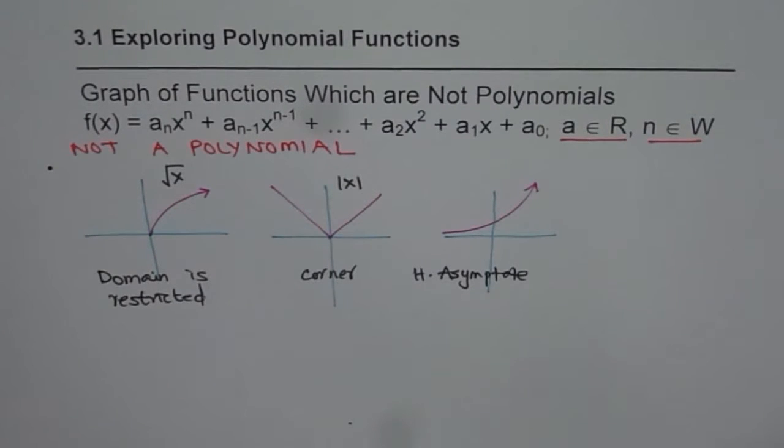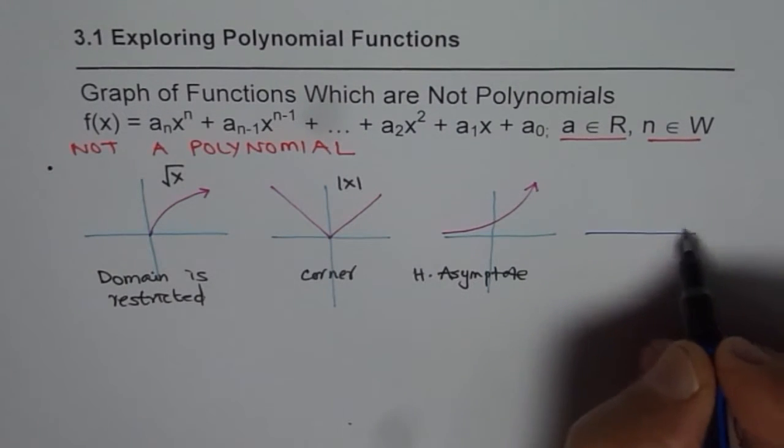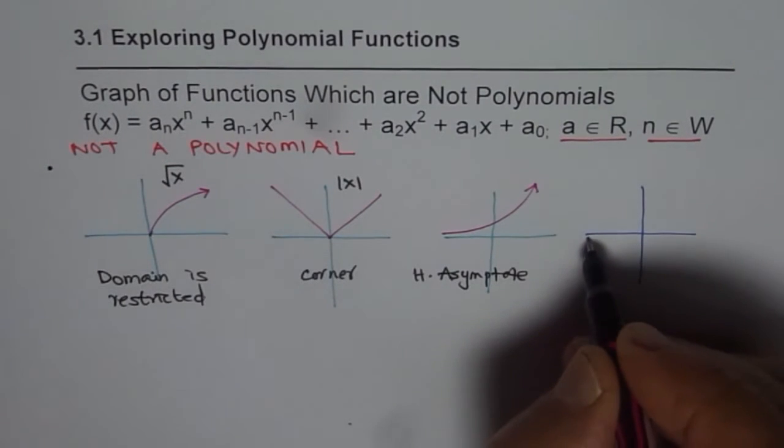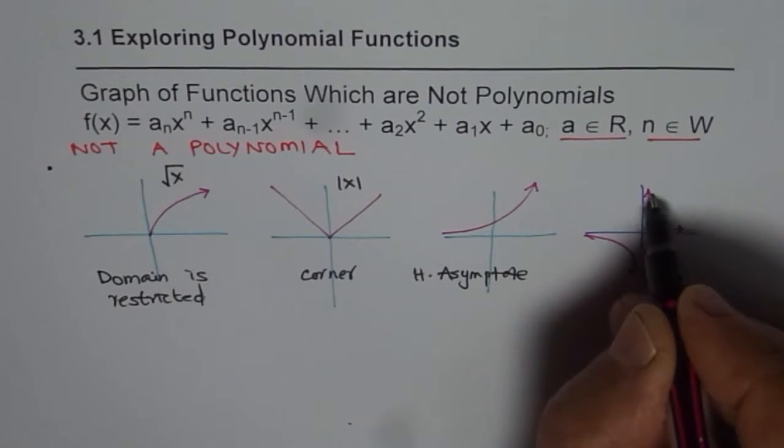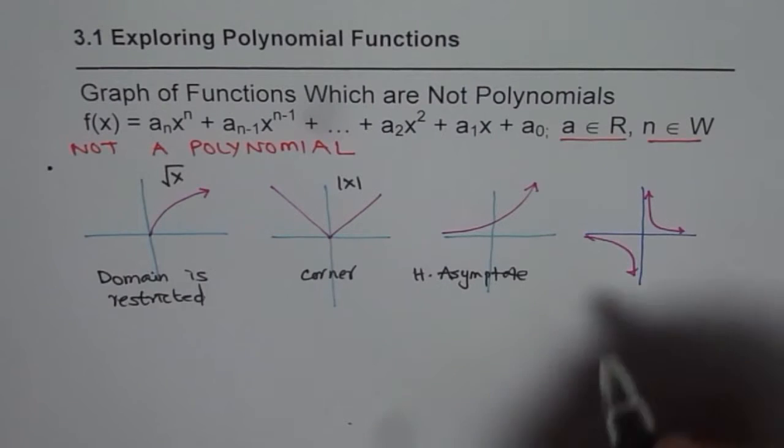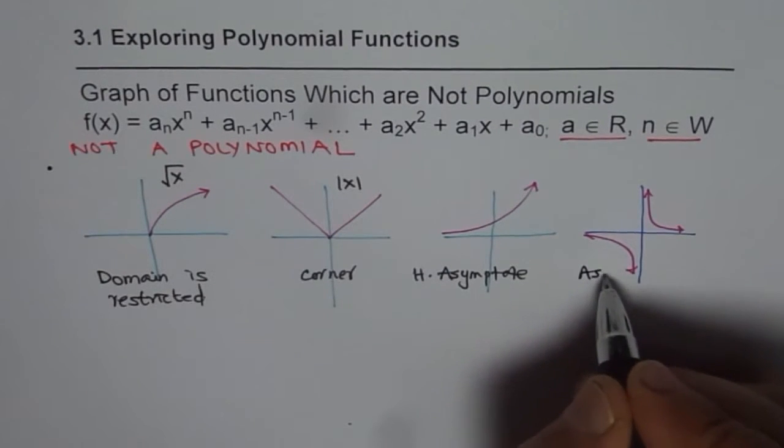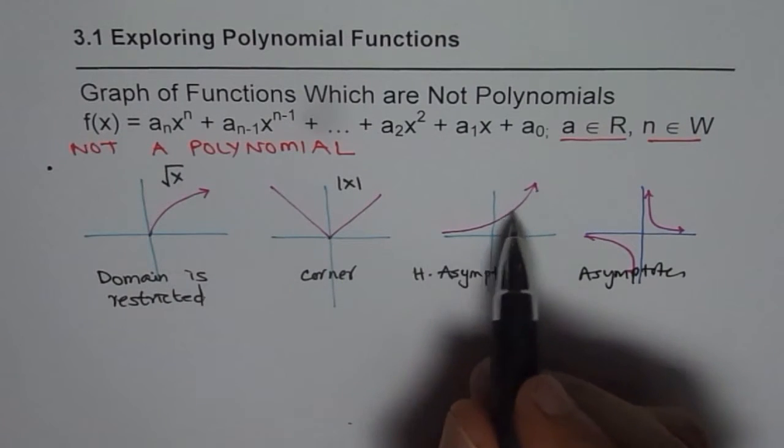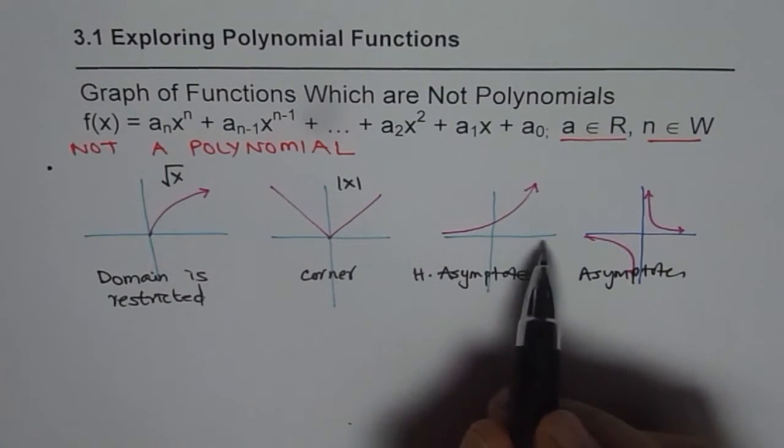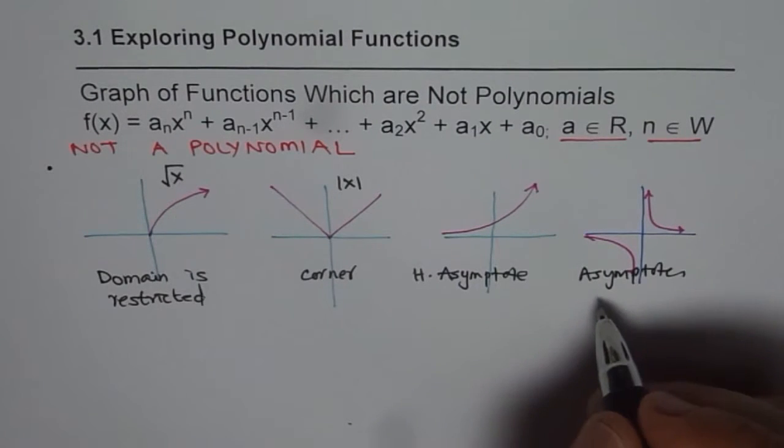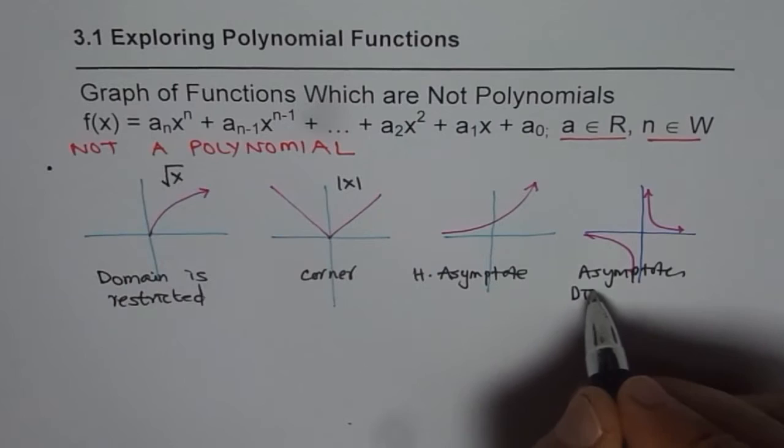We could have functions with both horizontal and vertical asymptote. You know the example - reciprocal function, 1 over x. So that is not a polynomial since it has asymptotes. And of course, in this case, there is no restriction on the domain, but here domain is restricted. So we have discontinuities and restrictions.